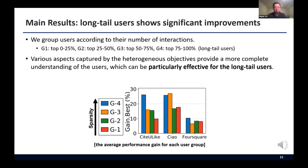We further analyze the impact of ConCF on users with different sparsity levels. And we found out that long tail users show significant improvement from ConCF. In specific, we group users according to their number of interactions, from Z1 to Z4. Here, Z4 corresponds to the long tail users. In the below figure, we observed that ConCF provides more accurate recommendations to all user groups. But particularly, the users with high sparsity in G4 takes more benefits from ConCF.